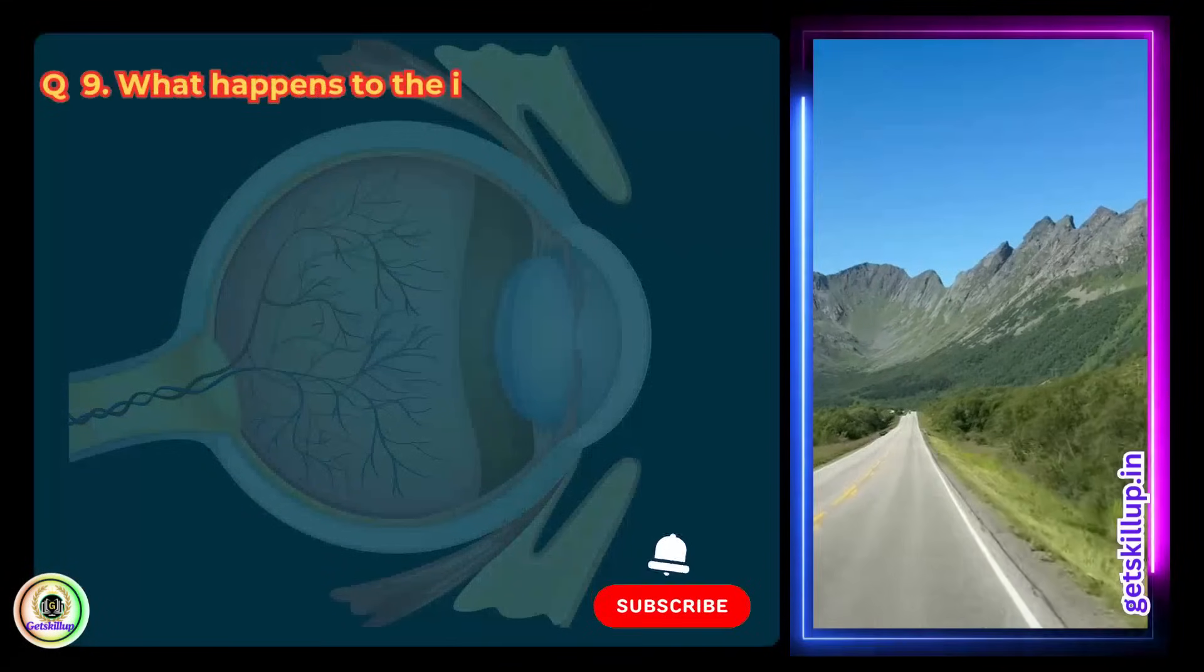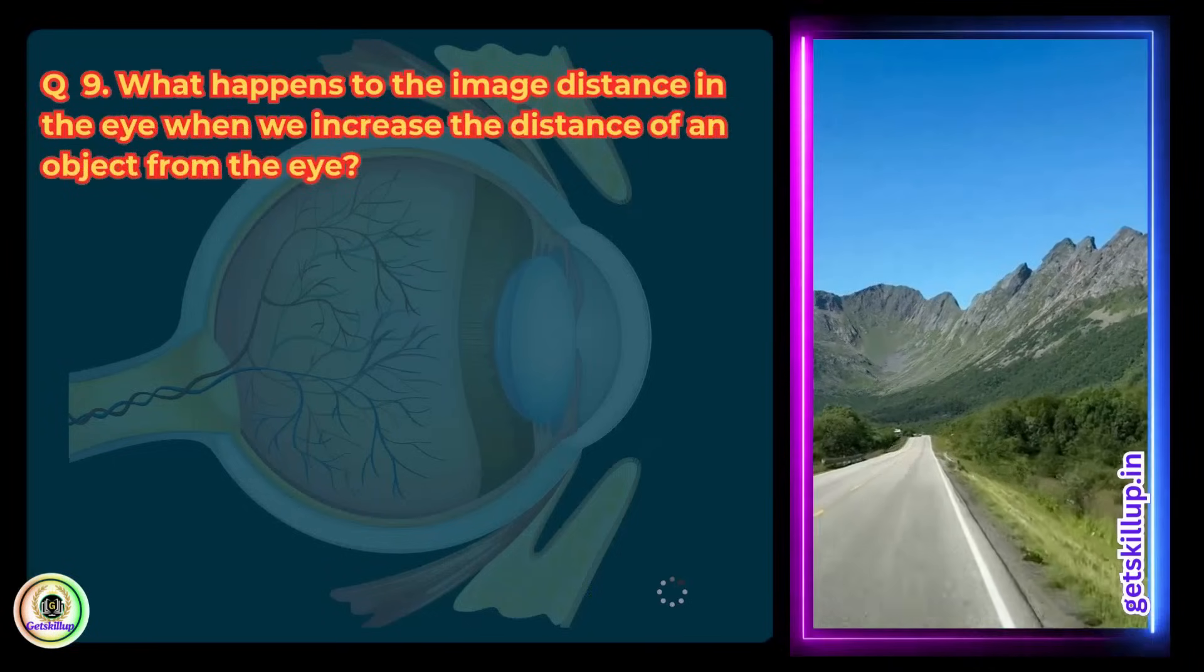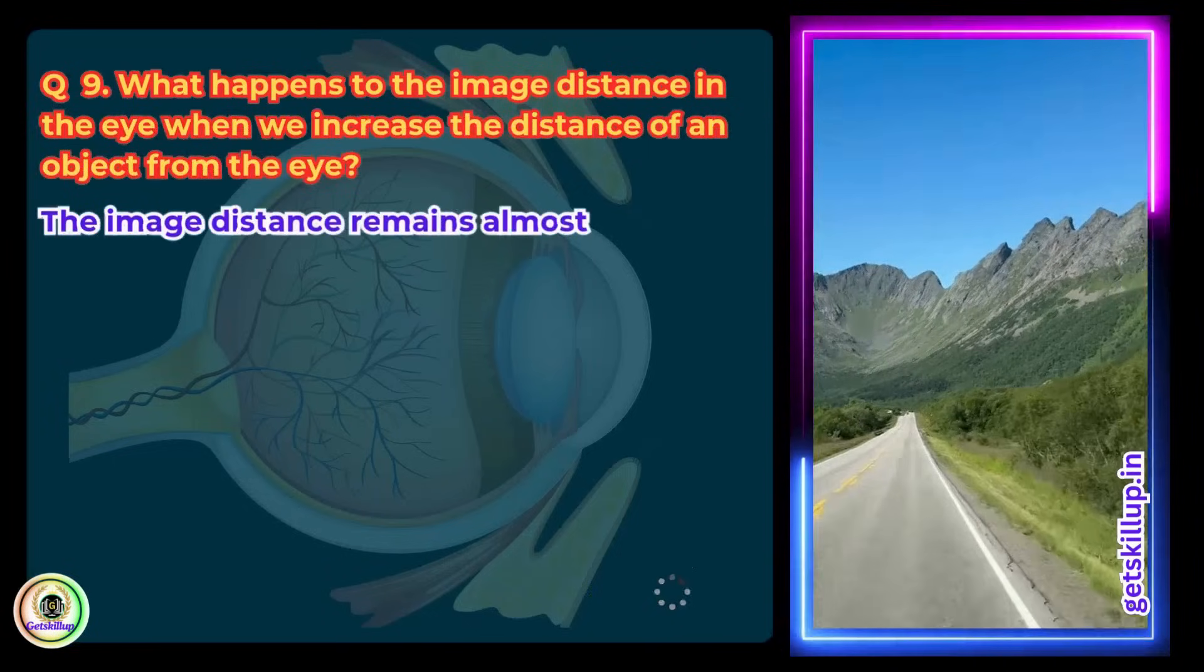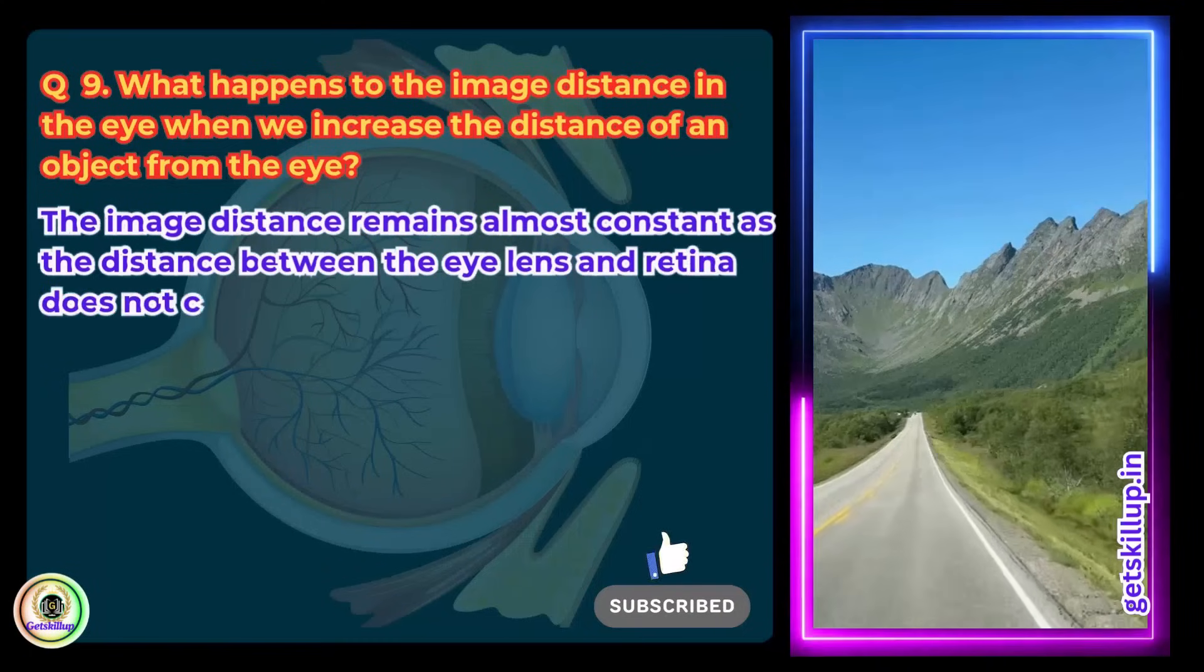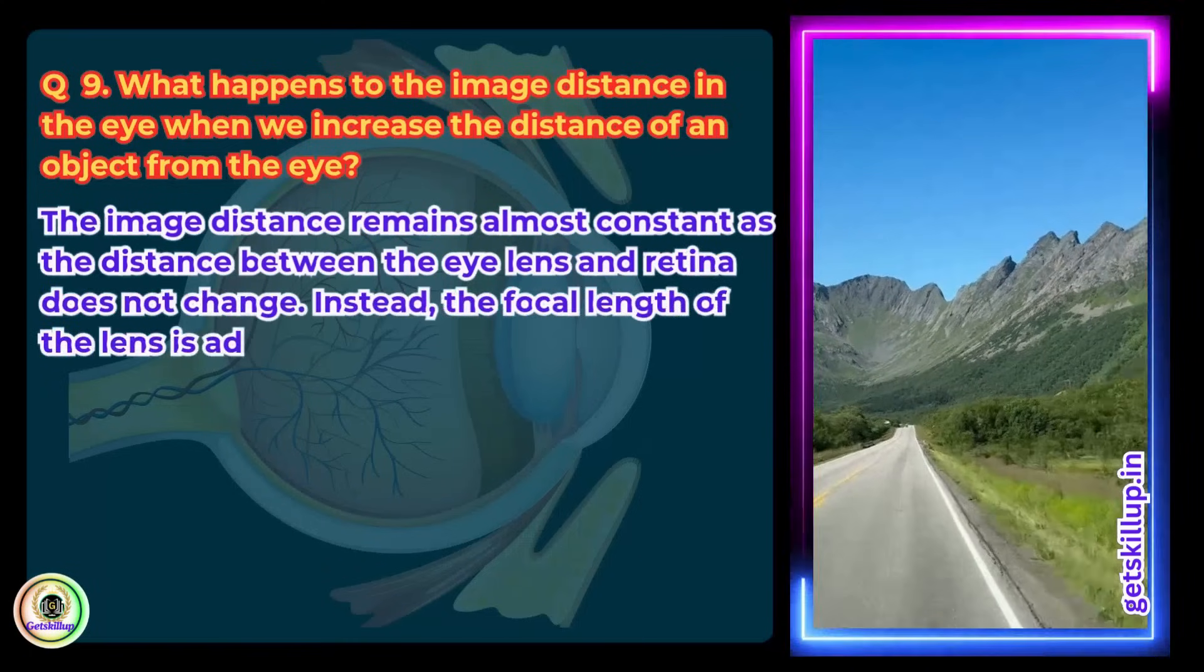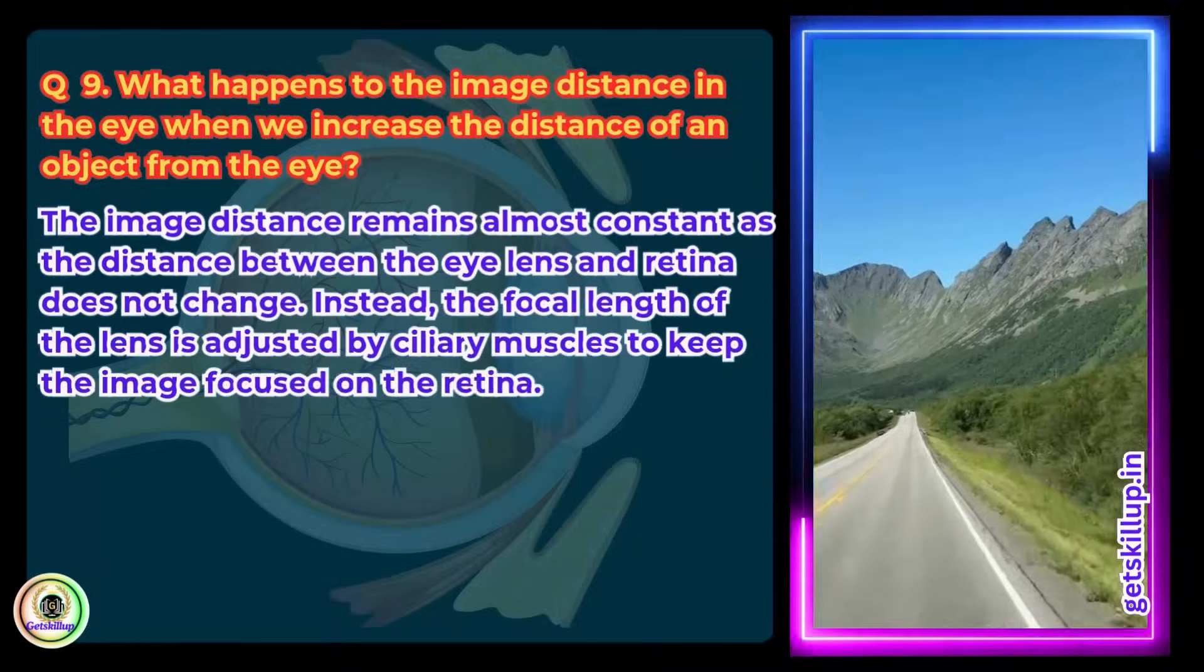Question 9. What happens to the image distance in the eye when we increase the distance of an object from the eye? Answer: The image distance remains almost constant as the distance between the eye lens and retina does not change. Instead, the focal length of the lens is adjusted by ciliary muscles to keep the image focused on the retina.